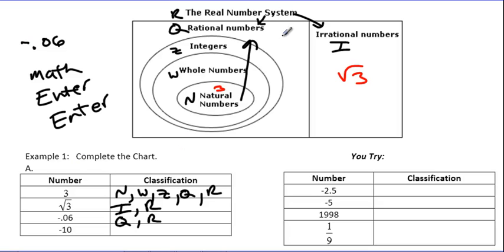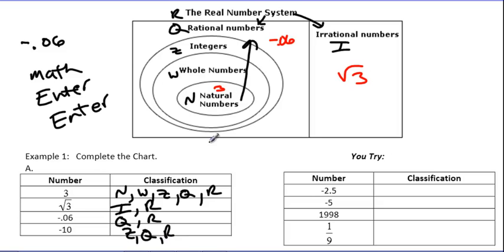So negative 0.06 starts at rational, and wherever we start, we take everything above — so it's rational and real. Negative 10 is next. Negative 10 — we wouldn't start counting with negatives, it's not a whole number. It's an integer. So we would call that Z, Q, R — integer, rational, and real.